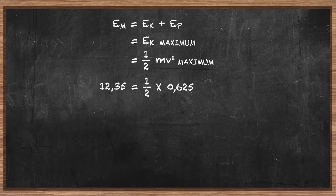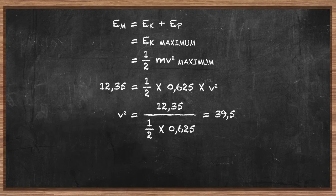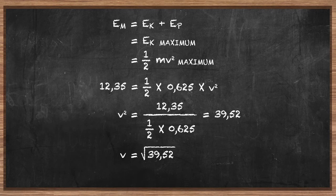Substituting the values, we calculate the value of v² as 39.52. Taking the square root of 39.52, we find that the ball left his hand with a speed of 6.29 meters per second.